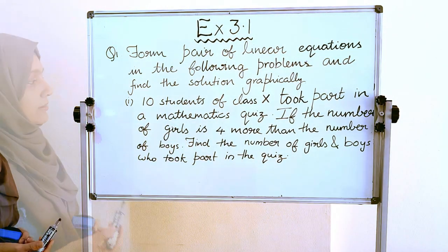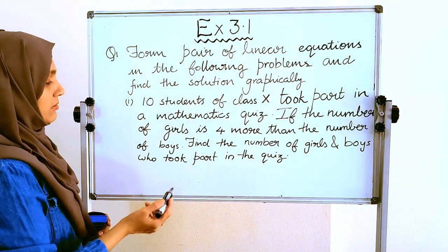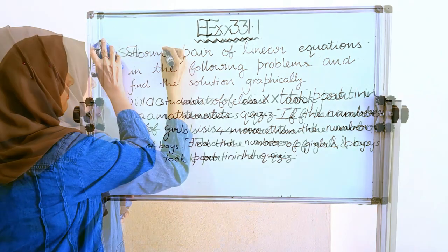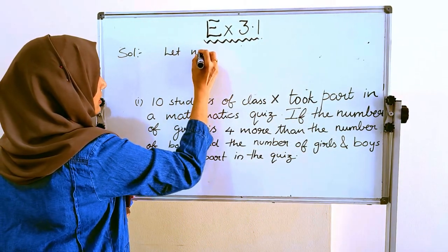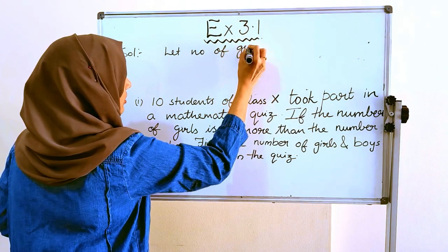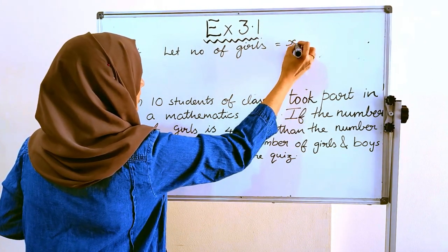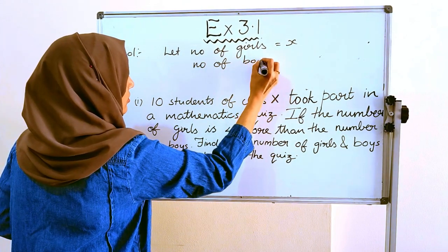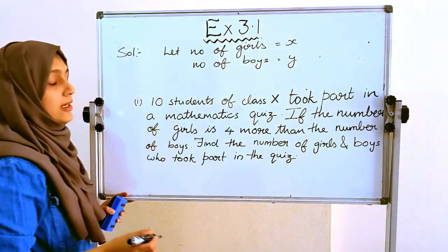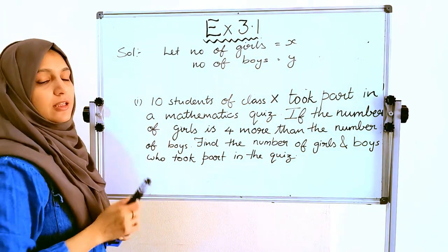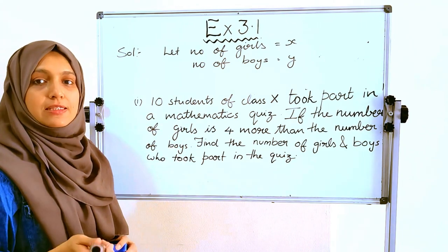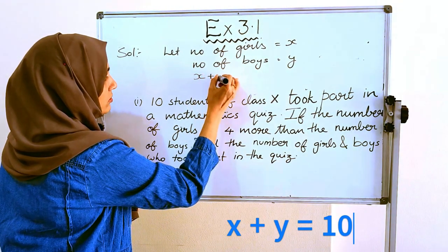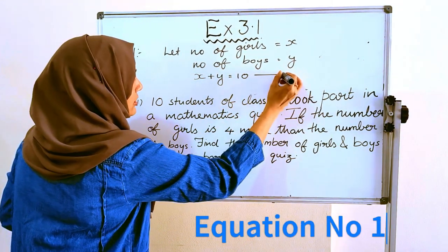There are 10 students in the quiz. Let the number of girls be x and the number of boys be y. The total number of students is 10, so number of boys plus number of girls equals 10. That gives us x plus y equals 10. This is our Equation 1.